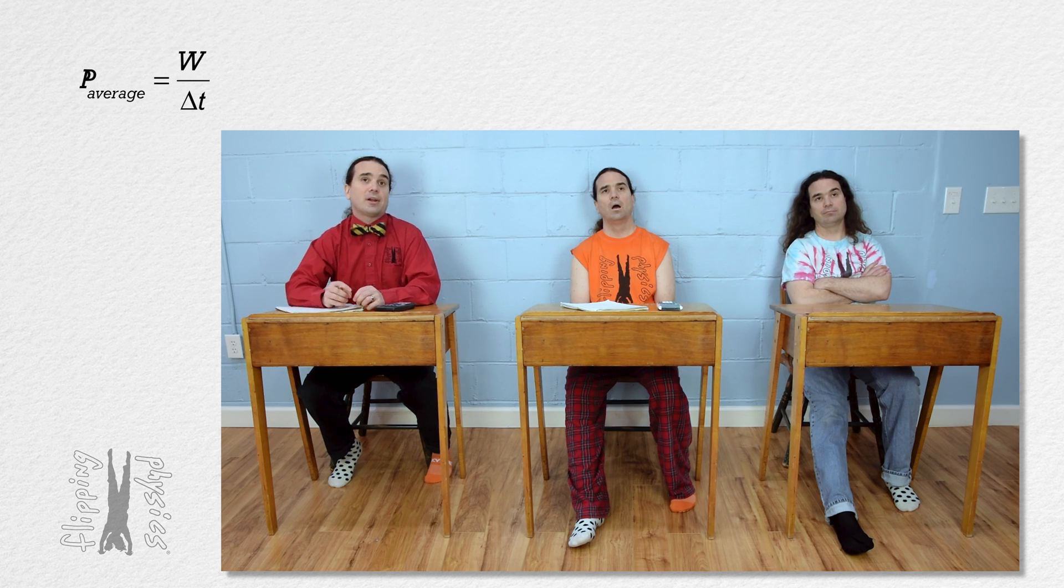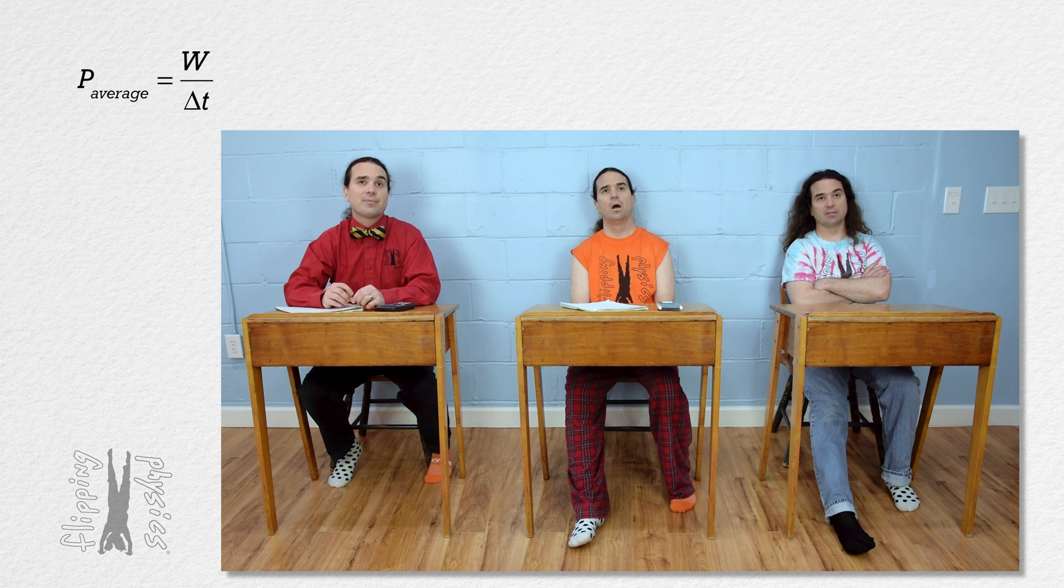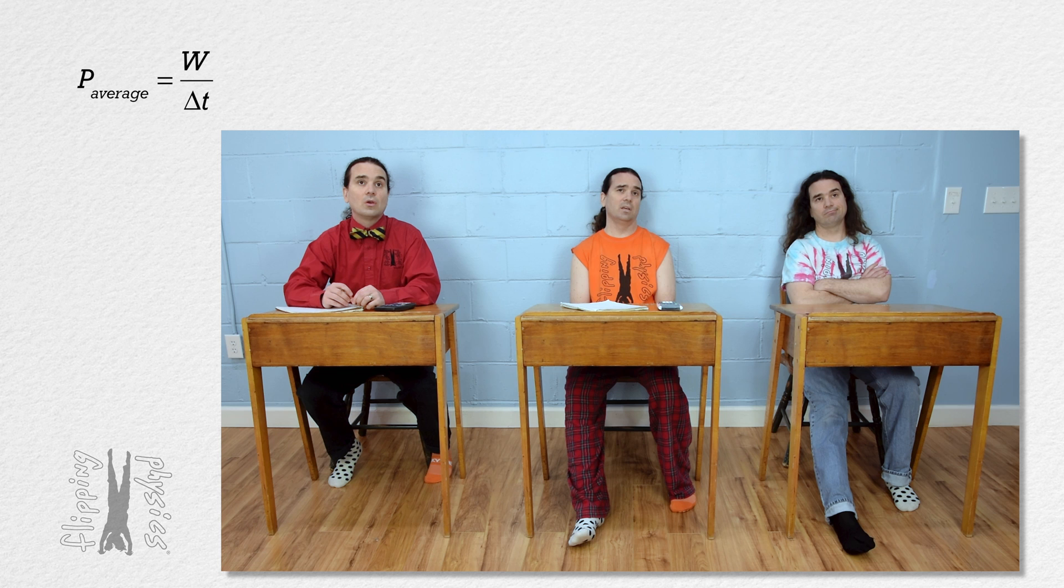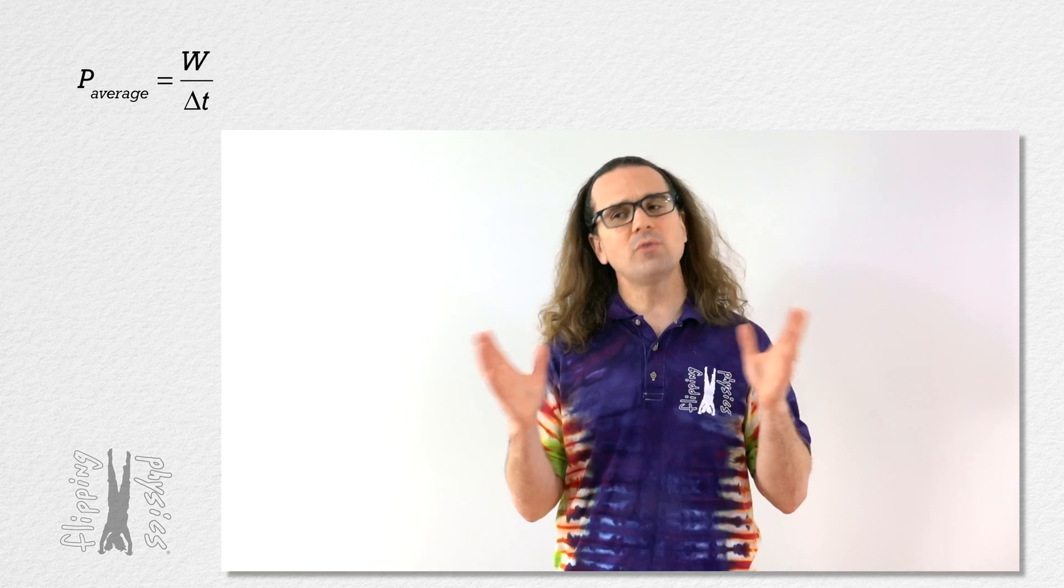And that this is work over change in time reminds us that this is what type of power, class? Average power. Right. Average power because it is over a time duration, not instantaneous power. Instantaneous power is at a specific time, not over a change in time.